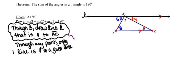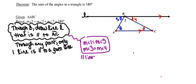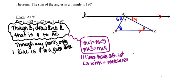Once I have that parallel line, I can talk about these angles being equal. I'll use equals because I want to talk about their measures. So the measure of angle 1 equals the measure of angle 5, and the measure of angle 3 is also equal to the measure of angle 4. This is because whenever we have parallel lines, alternate interior angles have equal measures. Ordinarily we'd say congruent, but here I want to work with angle measures.